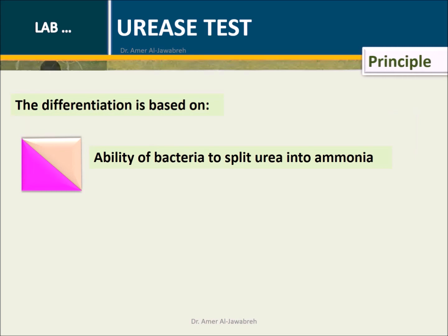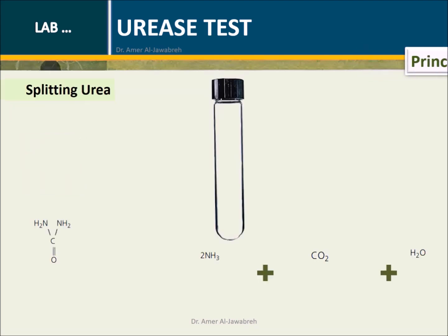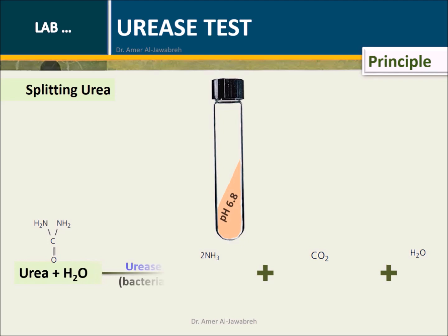Principle: The differentiation is based on the ability of bacteria to split urea. The urease enzyme in bacteria splits urea into ammonia, carbon dioxide, and water.